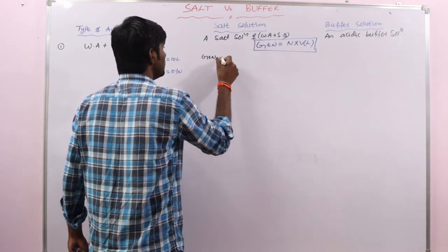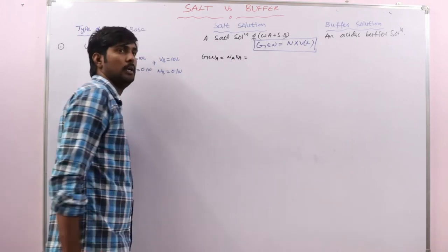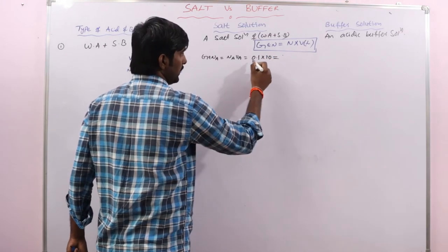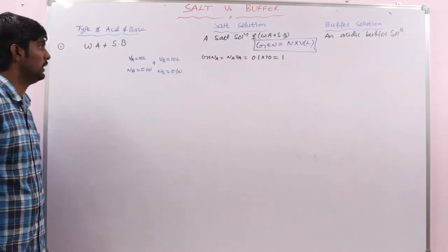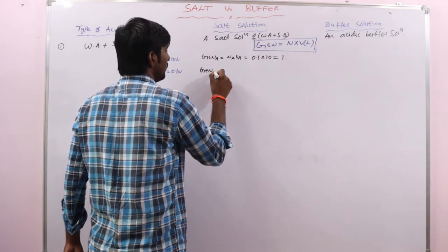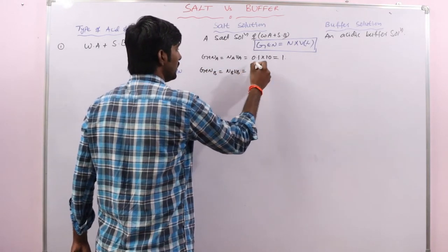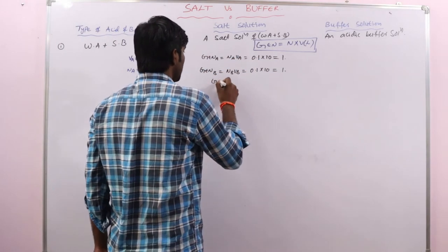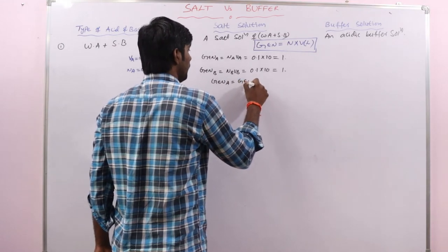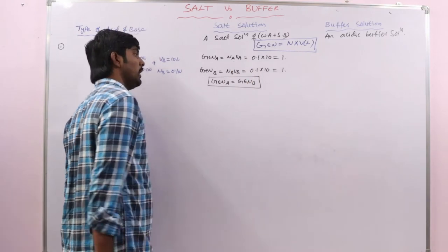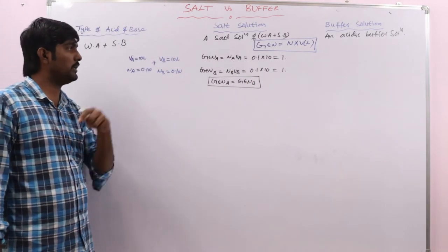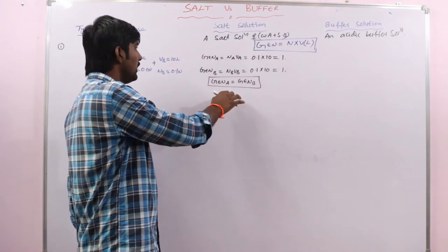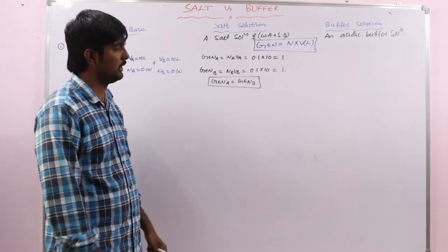To identify, first find GEN of acid = Na × Va = 0.1 × 10 = 1. Next, GEN of base = Nb × Vb = 0.1 × 10 = 1. Here, equivalence of acid equals equivalence of base. This is the condition for the formation of a salt. Since we have weak acid plus strong base, a salt of weak acid and strong base is formed, and we use the suitable formula to calculate pH.